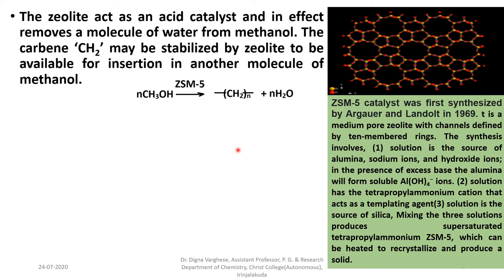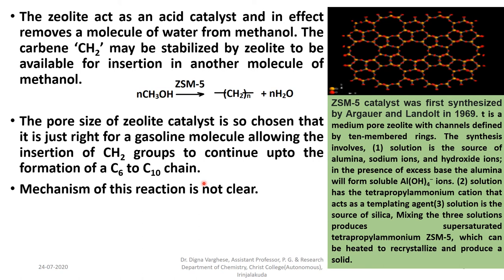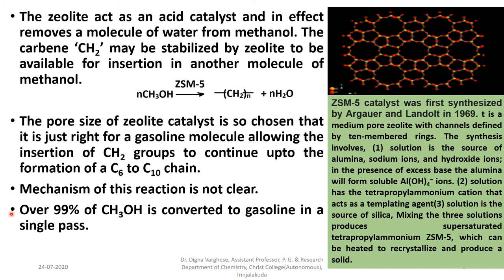The pore size of the zeolite catalyst ZSM-5 is chosen so that it is just right for a gasoline molecule (CH₂)ₙ, allowing the insertion of CH₂ groups to continue up to the formation of C6 to C10 chains. The mechanism of this reaction is not entirely clear. Over 99% of methanol is converted to gasoline in a single pass.